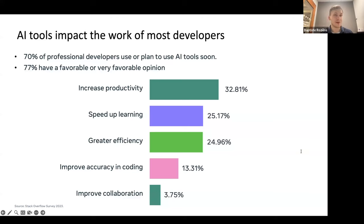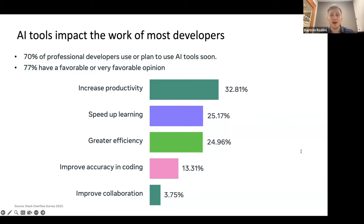People are already convinced these models are useful and are using them or planning to. So 70% of professional developers are either using or planning to use AI tools. Most also have a favorable opinion of these tools, and most people think it can increase their productivity.